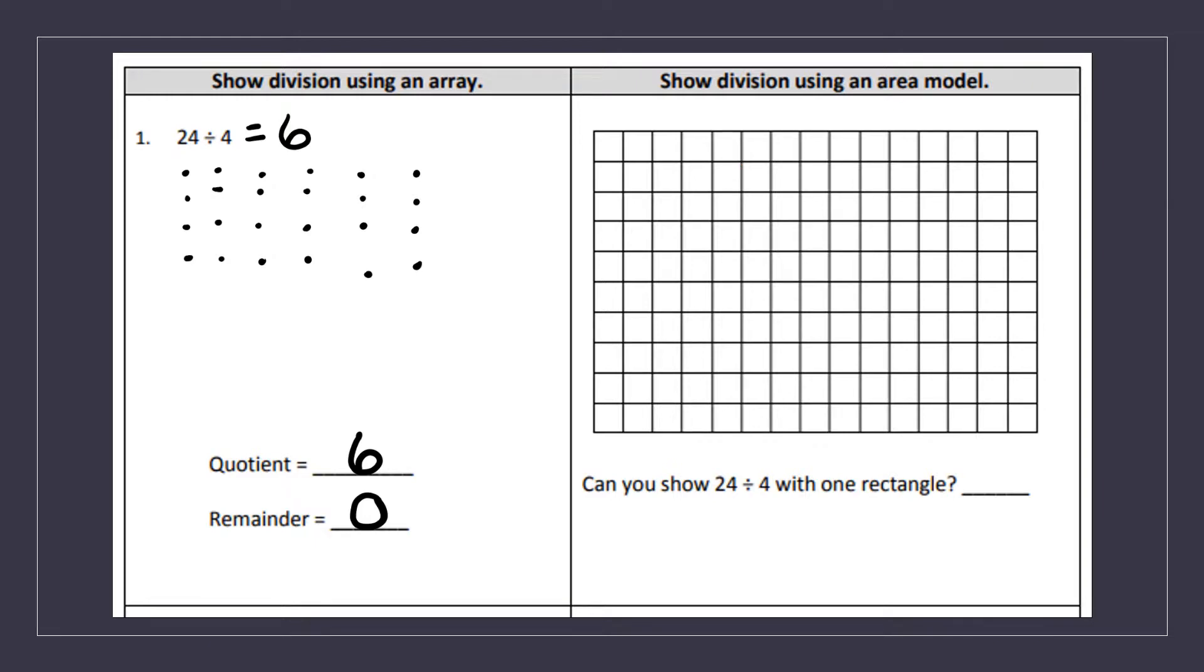So area is focusing on the number of squares on the inside. So I need to make a rectangle that goes four down and six across. One, two, three, four.